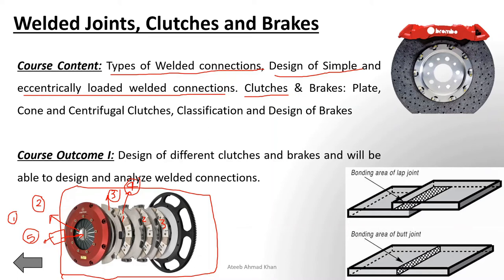There is another type of clutch — the cone clutch — which is obsolete nowadays but important from an analysis point of view. There is also the centrifugal clutch, which works on centrifugal force. As speed increases, there is a point where the clutch engages automatically. These types of clutches are used in lawn mowers. I'll explain the detailed working and design analysis of these clutch types in the coming classes.